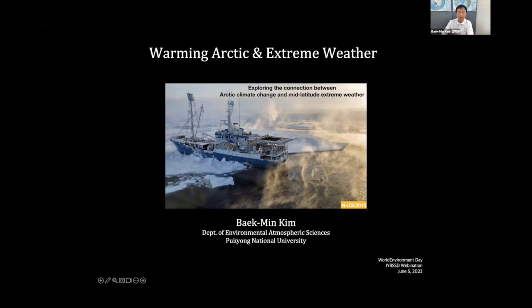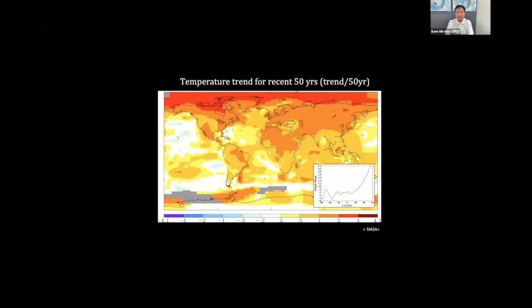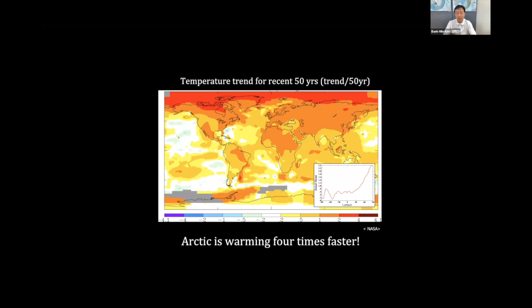Now everybody knows global warming is occurring and it causes huge temperature increases all over the world, but the temperature increase has a specific pattern. General people don't know the pattern, but the specific region experiences the biggest temperature increases. For example, the Arctic is actually warming four times faster than global average temperature. So there are many consequences because of this huge temperature increase. My talk is about this consequence.